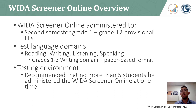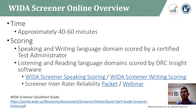Multiple students in varying grades are able to take the WIDA Screener at the same time. However, it is recommended that no more than five students be administered the WIDA Screener Online at one time. The WIDA Screener takes approximately 40 to 60 minutes to complete. Scoring for the speaking and writing domains takes place after the screener session has been completed. Scoring is completed by a trained and certified test administrator, and many districts reserve this permission set to only district test coordinators to ensure inter-rater reliability. The listening and reading language domains are automatically scored by the DRC INSIGHT software.